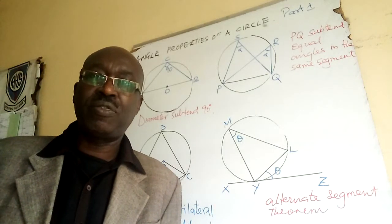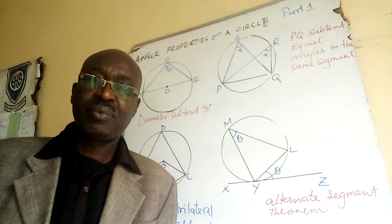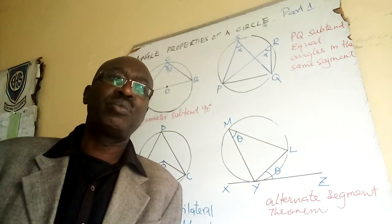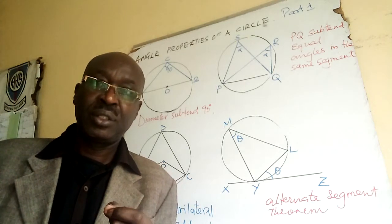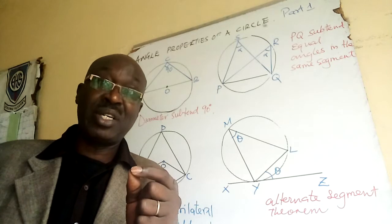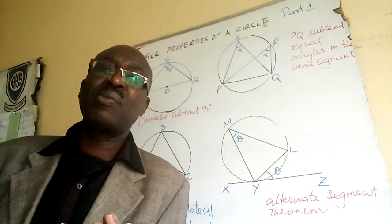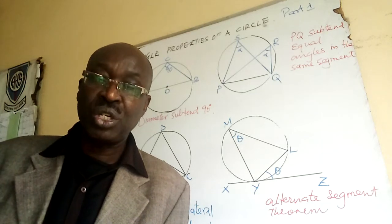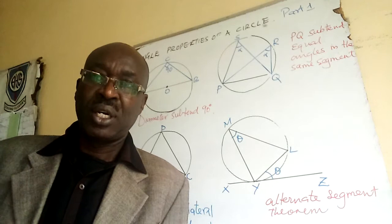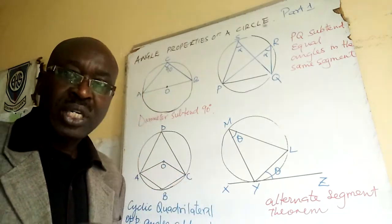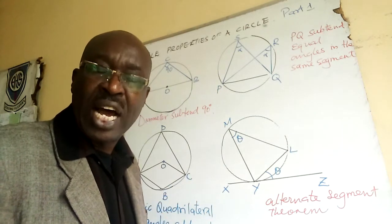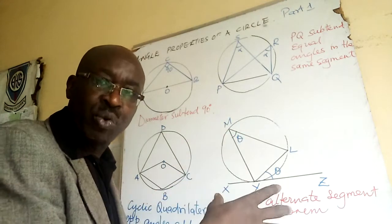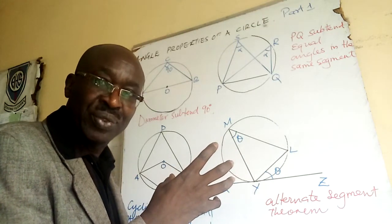Welcome to angle properties of a circle. You need some knowledge from primary school — in primary we were taught that a diameter subtends an angle of 90°. That is the basic I'm going to build on. Anytime you are asked about angles where a circle is involved, I'm not going to go into the details of proving — I'm just going to give you the tools that you need.